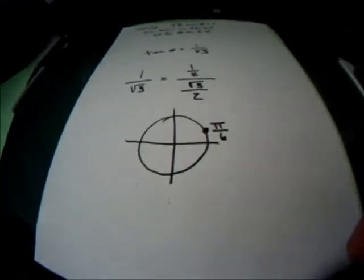So there is something on the unit circle that is exactly that, and that is π/6. Now, that is not our only answer, and that brings us to this.